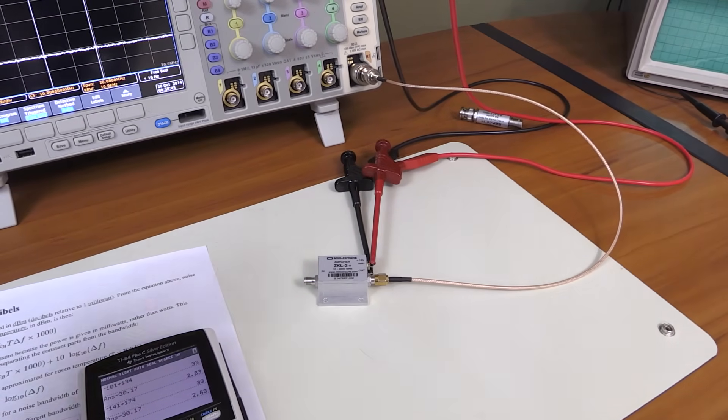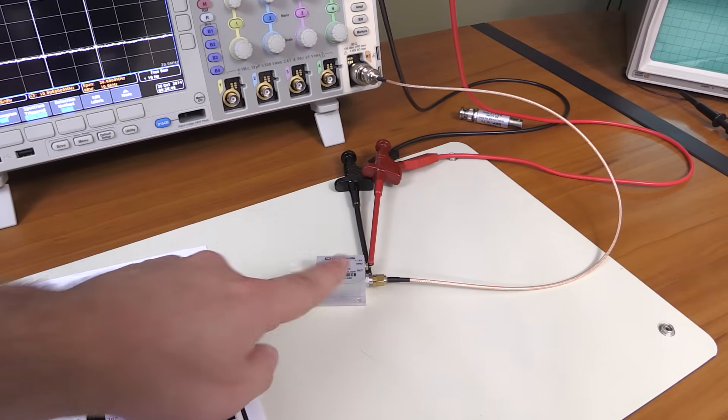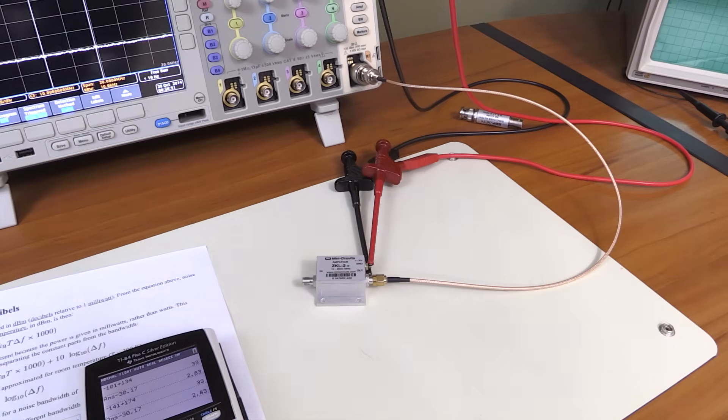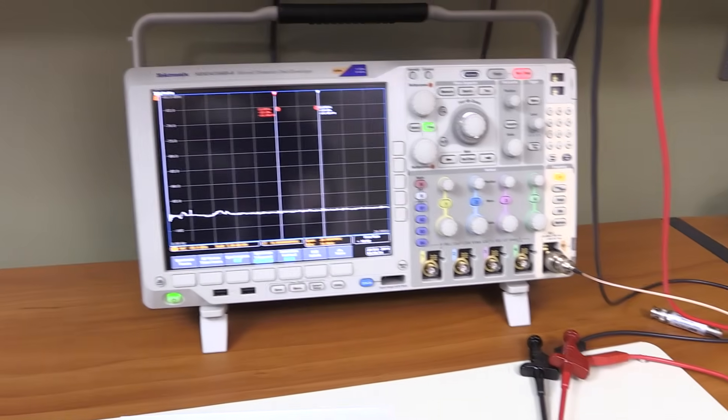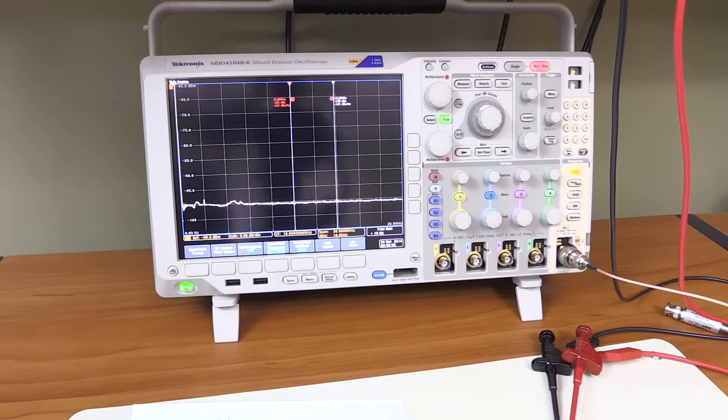So there's the ZKL-2 amplifier right here. The input is unterminated, just left open. The output goes directly into the MDO4000. And here's the MDO4000. There's nothing special about it. Just right out the box with the configuration that I showed you.